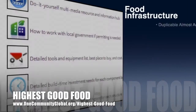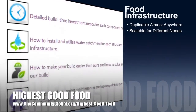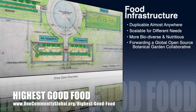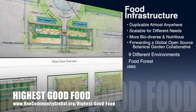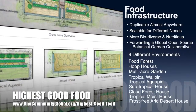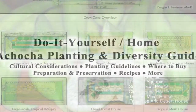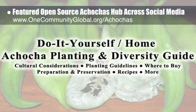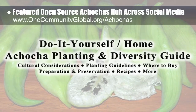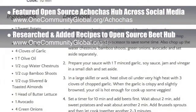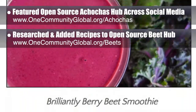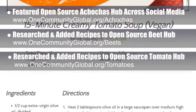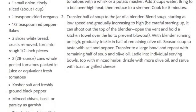OneCommunity's approach to Highest Good Food is duplicable almost anywhere, scalable for different needs, more biodiverse and nutritious, part of forwarding a global open source botanical garden collaborative, and includes nine different free shared and duplicable growing environments. This week, the core team working on Highest Good Food featured our open source Acha Cha Hub across our social media channels using a new social media image we created. We also researched and added additional recipes to the open source Beet Hub and to the open source Tomato Hub. More recipes from our food self-sufficiency transition plan will be added to each of these individual hubs in the future.